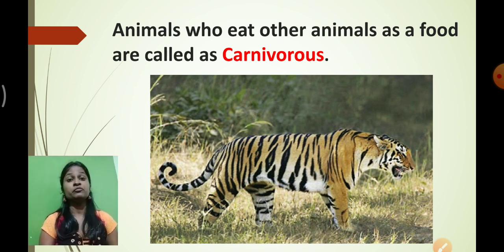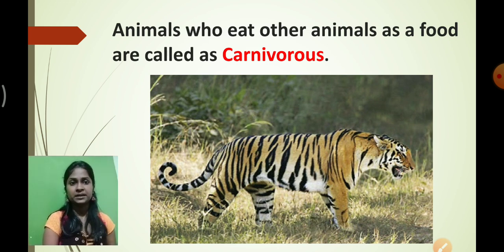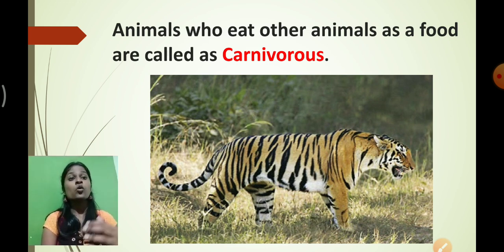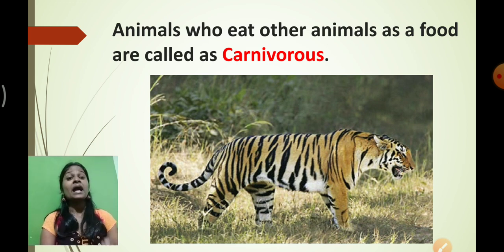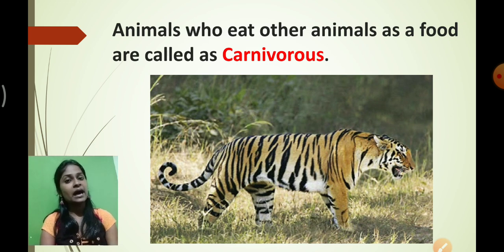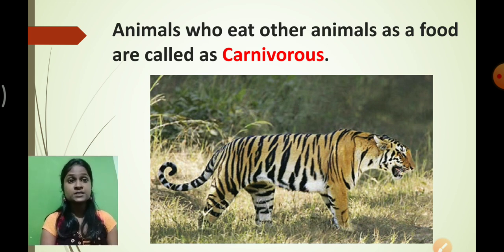There are many varieties of animals that do not eat plants — instead they eat other animals as food material. We call them carnivores. Animals who eat other animals as food material are called carnivores. As an activity, write down in your notebook the names of animals that are carnivores.